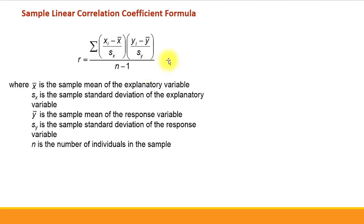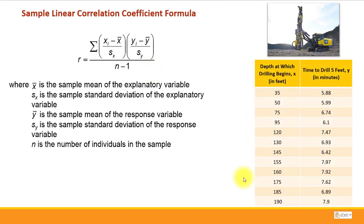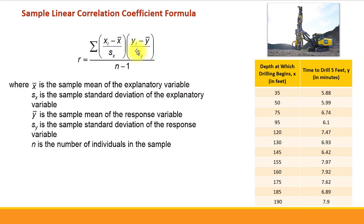Let's talk about the components of the formula and connect them to the example we'll use for practice. In this example we have bivariate data describing drilling. One variable measured is the depth at which drilling begins, and another is the time to drill five feet. For example, when drilling started at 120 feet below the surface it took 7.47 minutes to drill five more feet. In the formula, x is the explanatory variable — here that's the depth at which drilling begins.